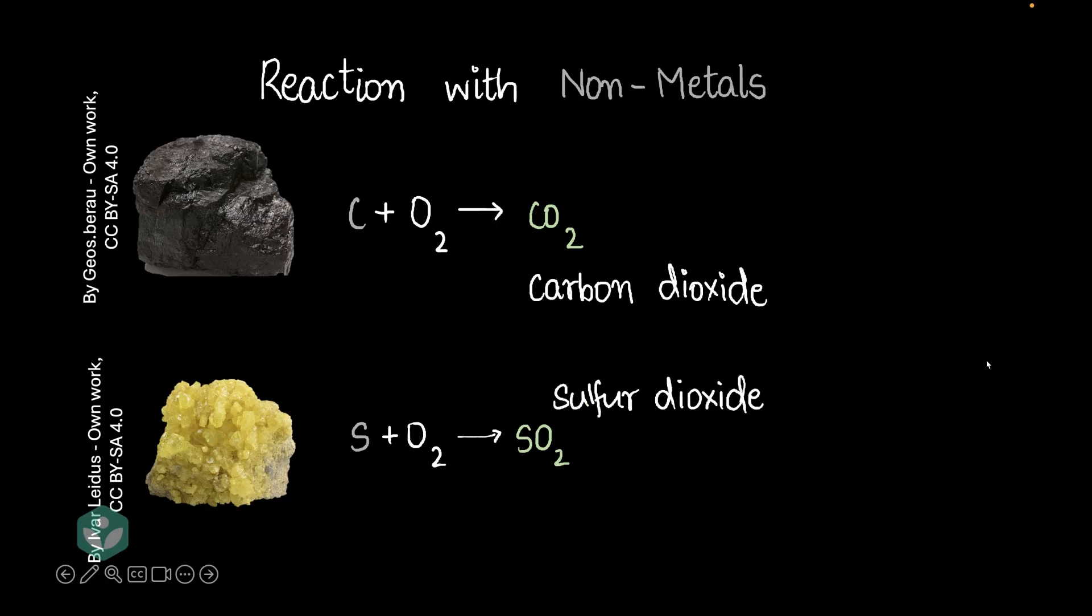Now, the interesting thing about sulfur is that this sulfur dioxide can further react with oxygen to give sulfur trioxide. So, with sulfur, you have two different types of oxides. You have sulfur dioxide as well as sulfur trioxide. Well, if you're wondering why it's possible to have two different types of sulfur oxides, that's because sulfur can show two different types of valencies. Okay, before we move on, I'll just balance this last equation so that it's perfect.